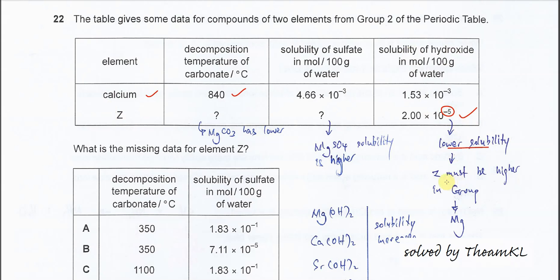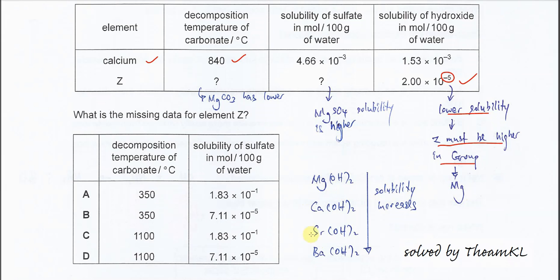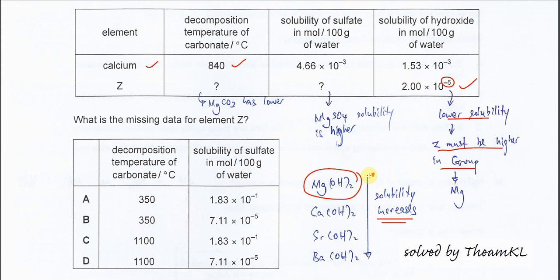Therefore we know that Z must be higher in Group 2, because when going down Group 2, the hydroxide solubility increases. Since the solubility of Z hydroxide is much lower, it must be higher in the group, most likely magnesium. Magnesium hydroxide has lower solubility.